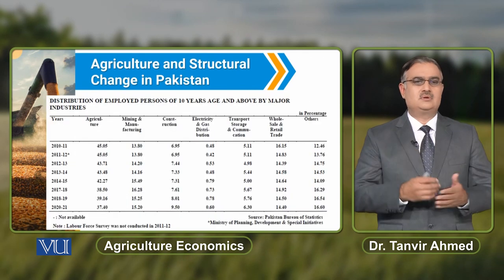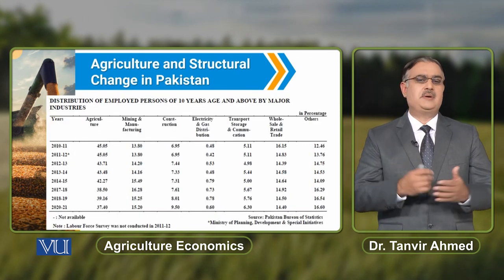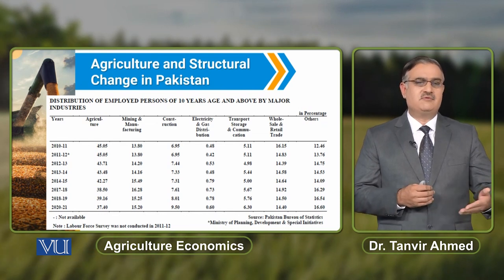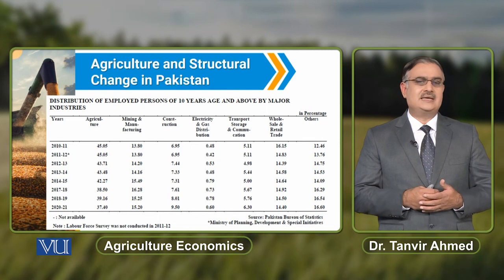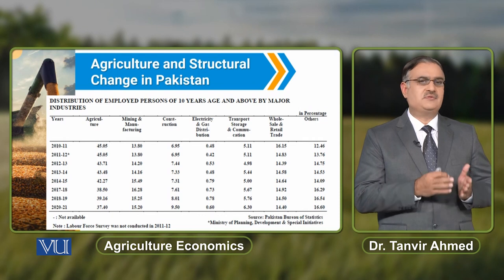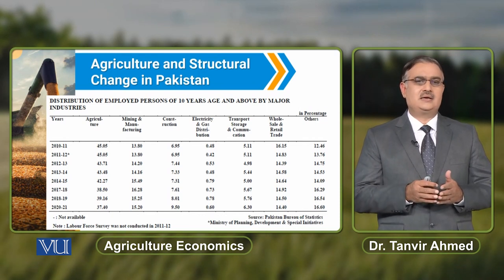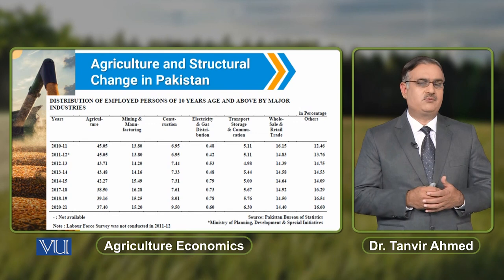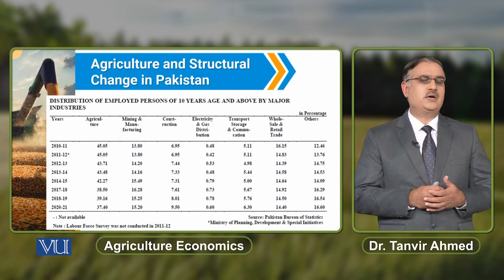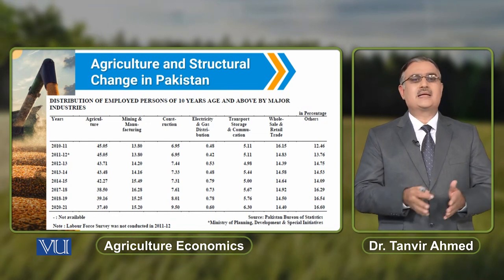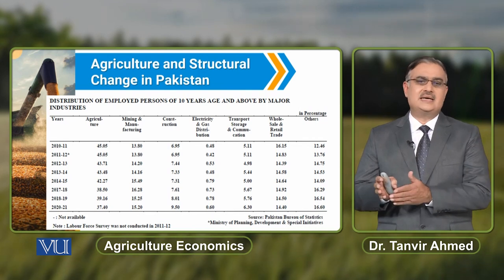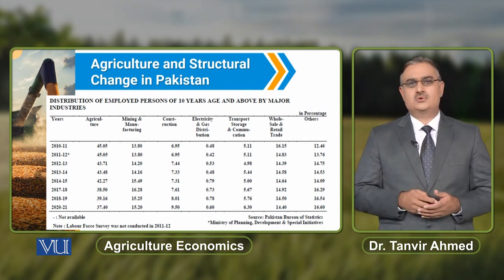We can observe in this table that from 2010 to 2021, there is a consistent decline in the share of employed labour force in the agricultural sector. In fiscal year 2010–11, agriculture's share in total employment was 45.05%, and in 2020–21 it was around 37.40%. In all other sectors listed, there is a consistent increase in the share of employed labour force.